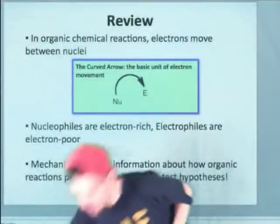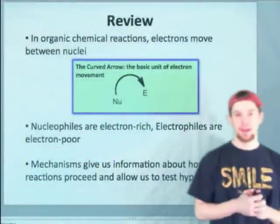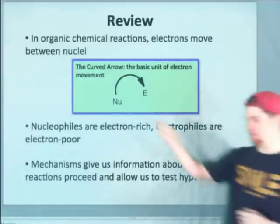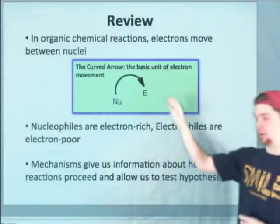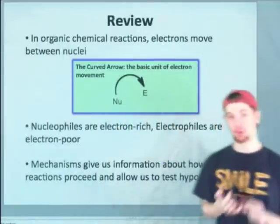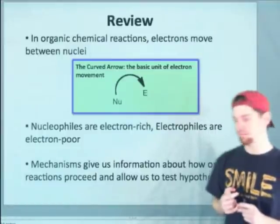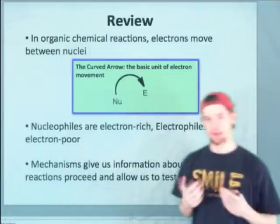Last time we looked at reactivity in terms of electrons moving between nuclei. We represented this idea of the curved arrow from nucleophile, which is an electron-rich species, to electrophile, which is an electron-poor species, and said that this is how reactions occur.